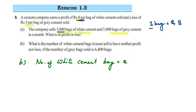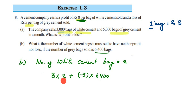Since neither profit nor loss means the total should be zero, the profit from white cement is 8 rupees per bag, so it will be 8 into x. They're selling 6,400 grey cement bags at a loss of rupees 5, so it will be minus 5 multiplied by 6,400. Adding profit and loss should equal zero, so we form the equation: 8x + (minus 5 × 6,400) = 0.